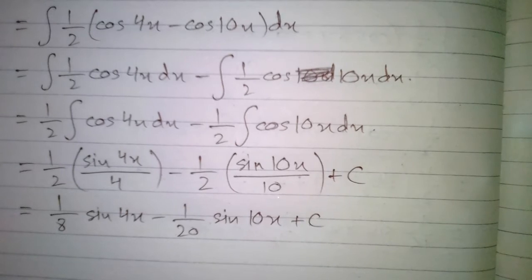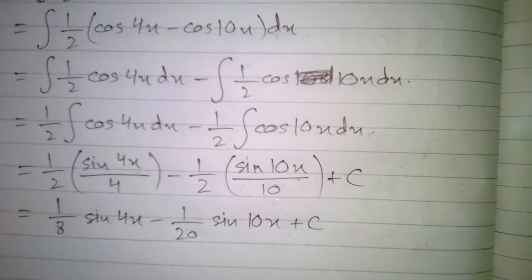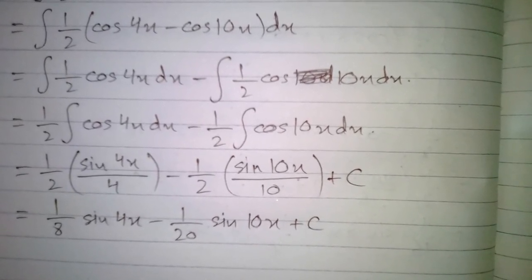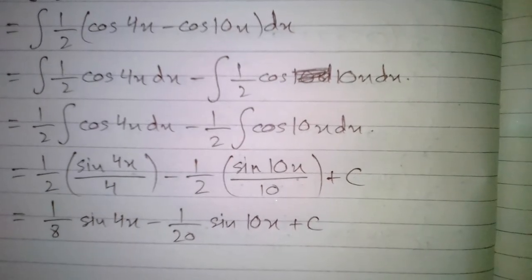So the integral of sin(7x)·sin(3x) is equal to 1/8 sin(4x) minus 1/20 sin(10x) plus C.